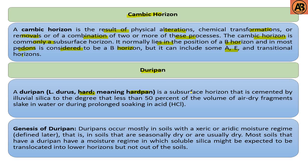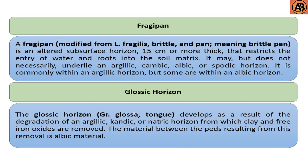The next one is the duripan. Duripan — durus meaning hard — is a subsurface horizon cemented by illuvial silica to the degree that less than 50 percent of the volume of air-dry fragments slake in water during prolonged soaking in acid. Duripans occur mostly in soils with a xeric or aridic moisture regime — that is, in soils that are seasonally dry or usually dry — in which soluble silica might be expected to be translocated to lower horizons but not out of the soils.